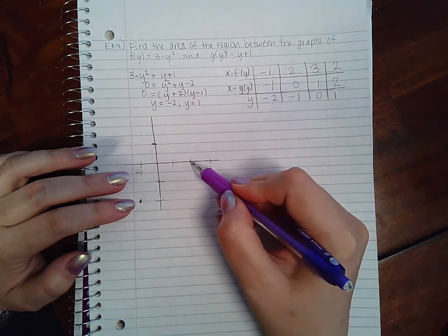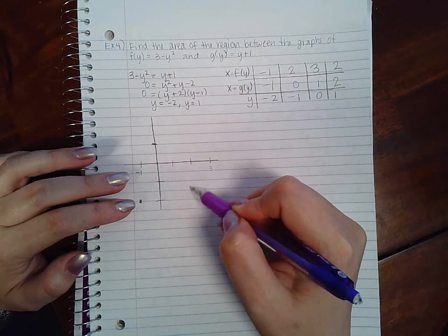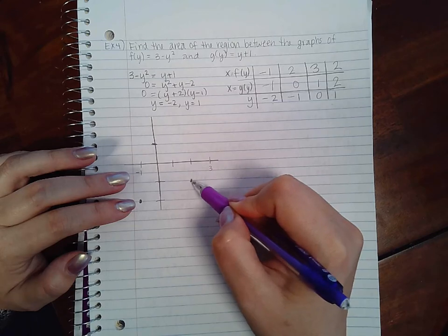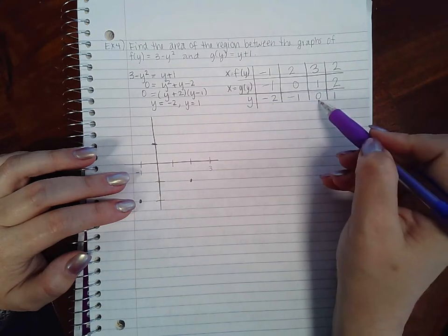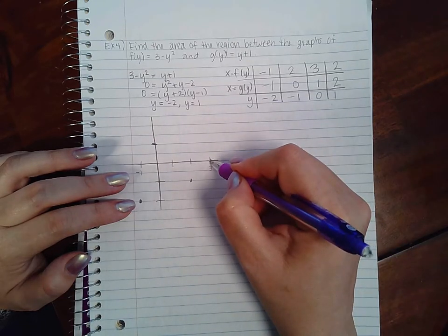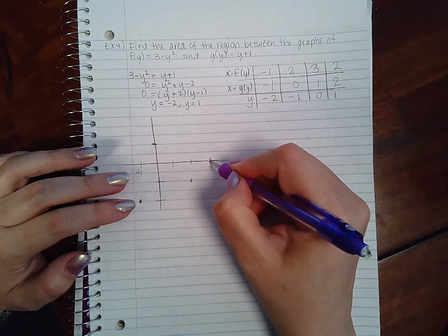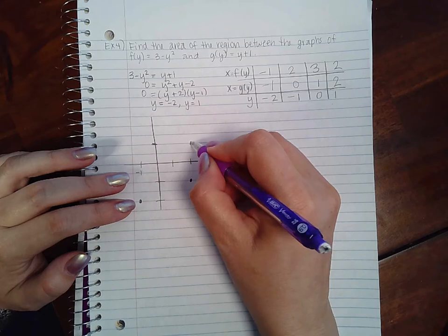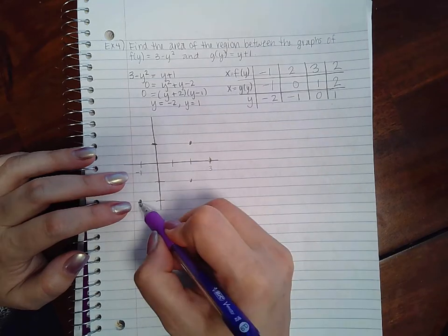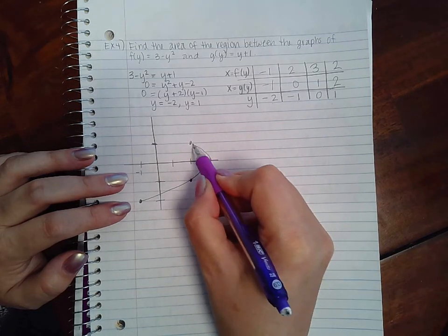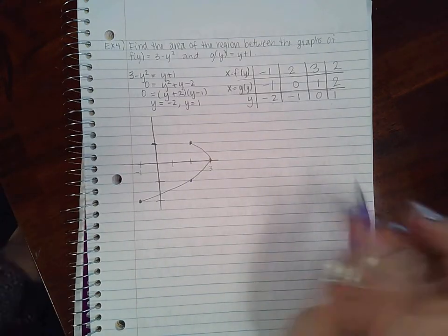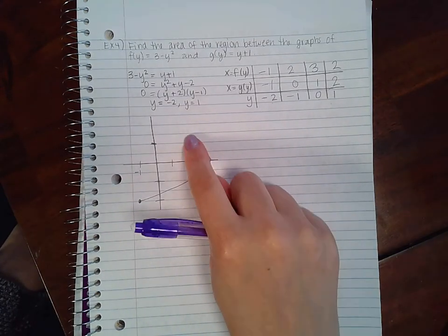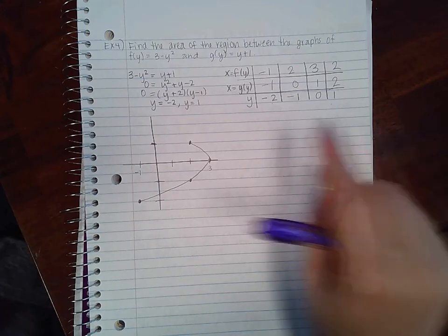Let's graph the top function first. When x is -1, y is -2. When x is 2, y is -1. Then when x is 3, y is 0, and when x is 2, y is 1 again. So that means my function is moving like this in this path from the first x value to the last.